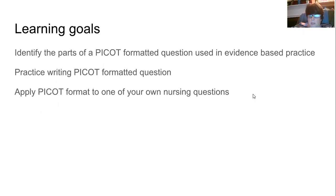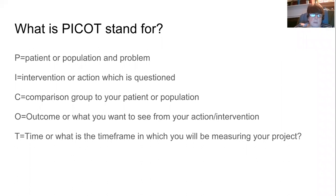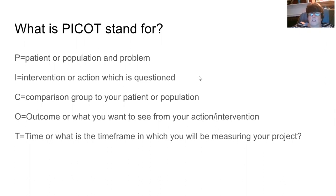You'll develop your own question and get feedback from me about that. So what does PICO stand for? PICO is an acronym that represents the following components of a good clinical question. The P is for patient or population and the problem you're thinking about. The I is the intervention or action being questioned — what are you looking to do to make a difference with the problem? C is a comparison group to your patient or population. O is your outcome, or what you expect to see from your action or intervention. And we always want a time frame in which you'll be measuring your project.